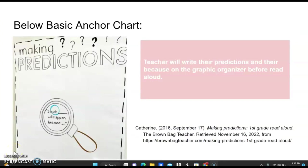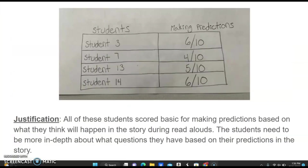This is the anchor chart that the teacher will use. The teacher will write students' predictions and their 'because' — their reasoning — on the graphic organizer before the read-aloud. The next group of students is the basic group. These students scored basic because they were about in the middle of the range, and they scored basic for making predictions based on how they think the story will happen in the read-aloud.